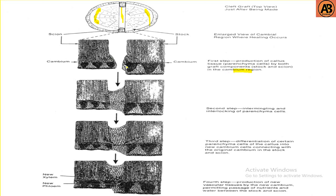Both rootstock and scion are attached together in the cambium region. The second step is the intermingling and interlocking of parenchyma cells from both scion and rootstock at the vascular cambium. The third step is the differentiation of certain parenchyma cells of the callus into new cambium cells, connecting with the original cambium in the stock and scion.